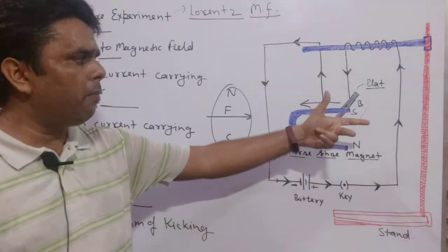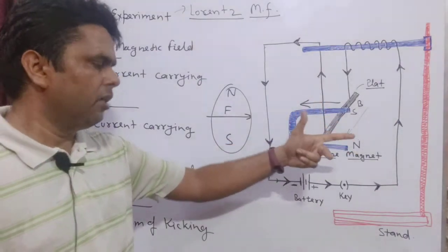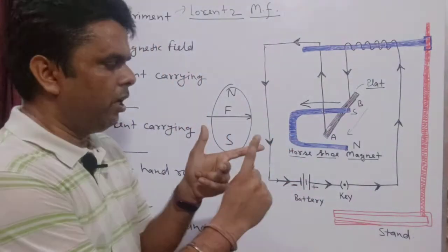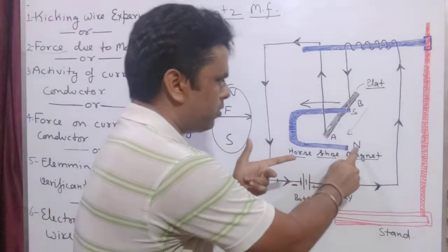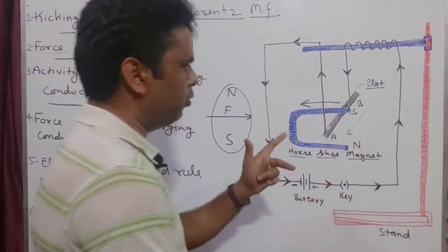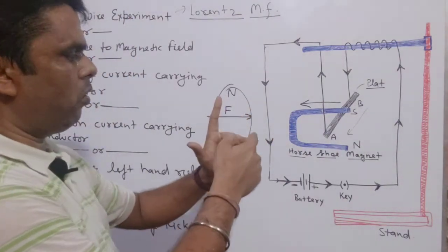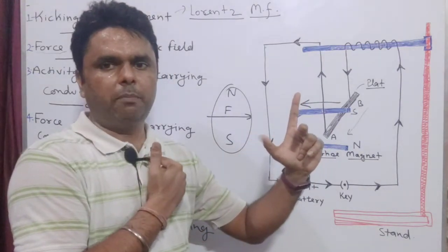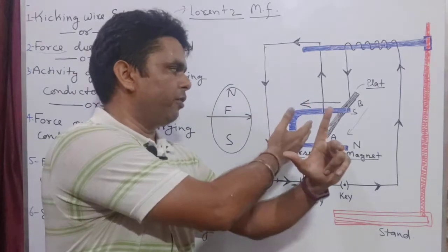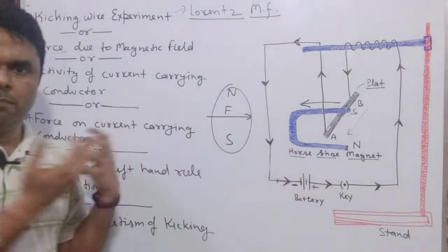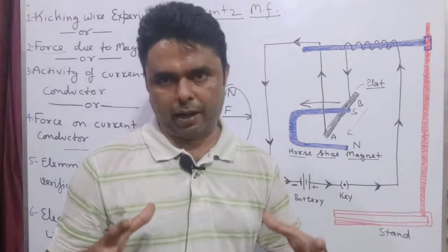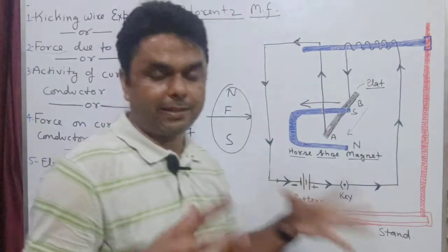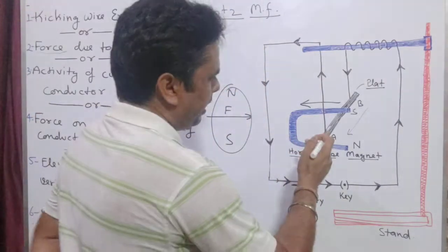So the kicking effect here told us the direction of force — relative to the north-south magnetic field and the current flow direction — and the relation between all three is Fleming's Left Hand Rule. So Fleming's left hand rule is this very kick. My thumb — that is Father — gives the force direction. My four fingers — that is Mother — give the magnetic field direction. My middle finger — that is Child — gives the current direction. FMC.